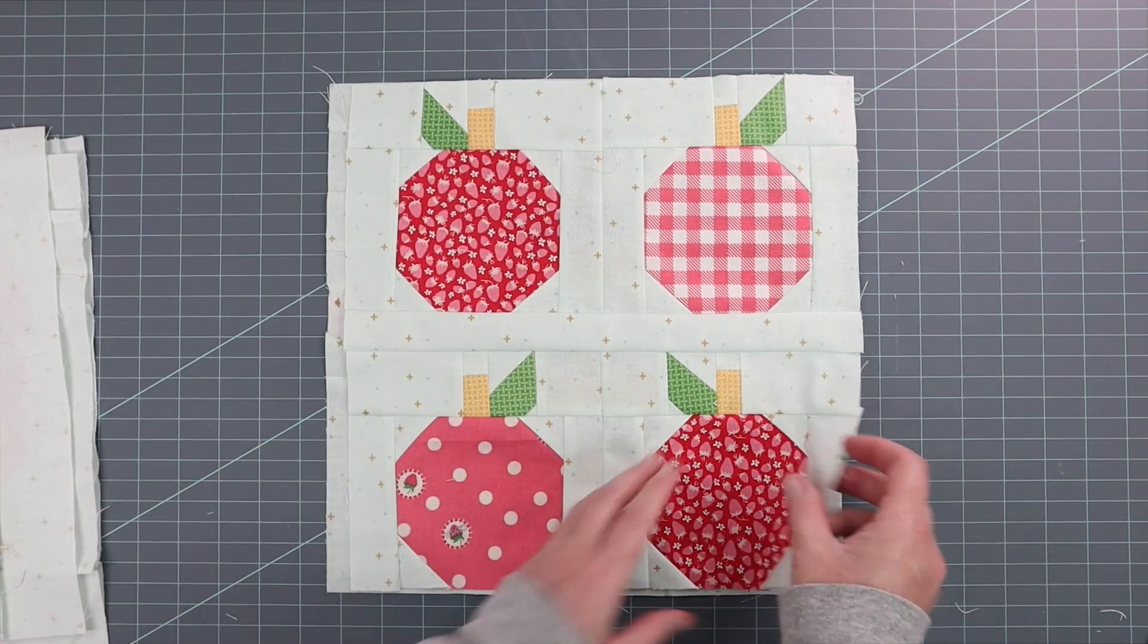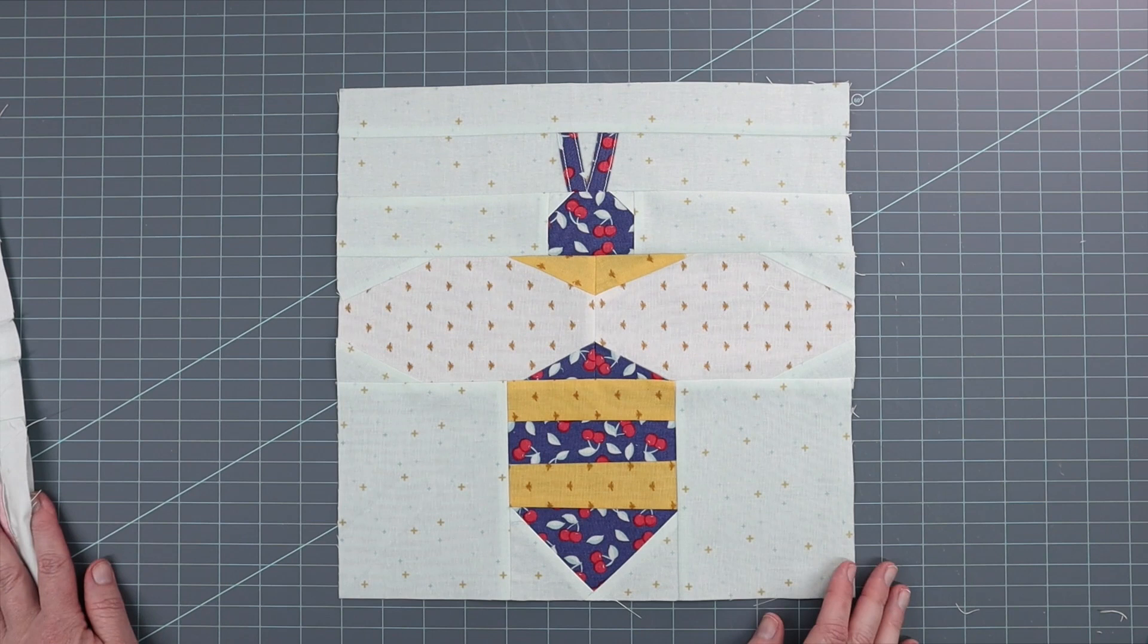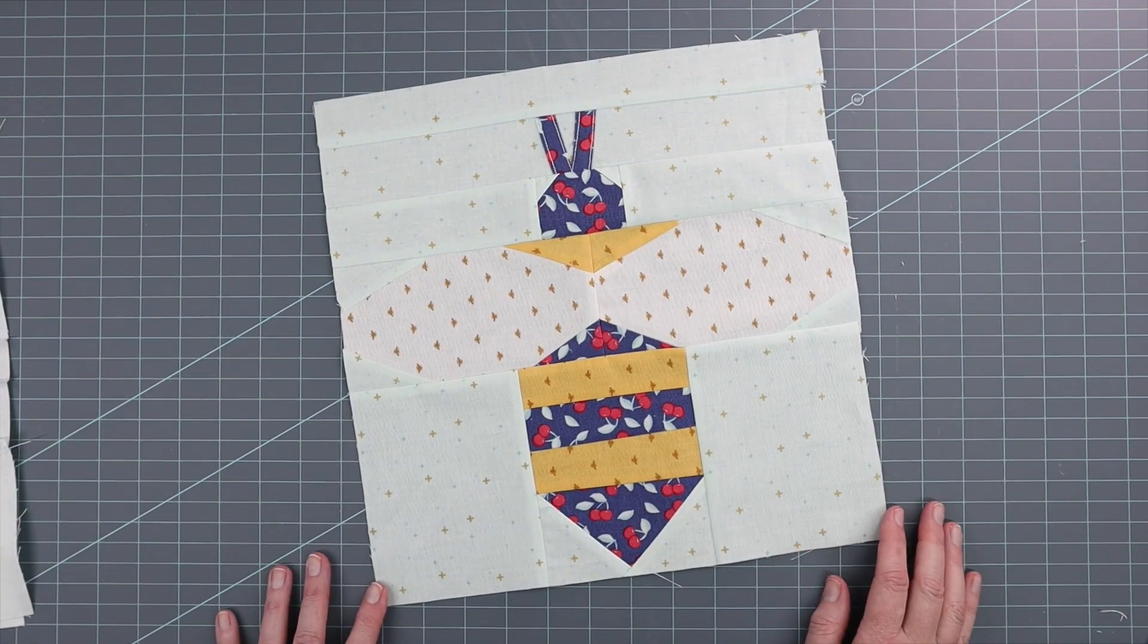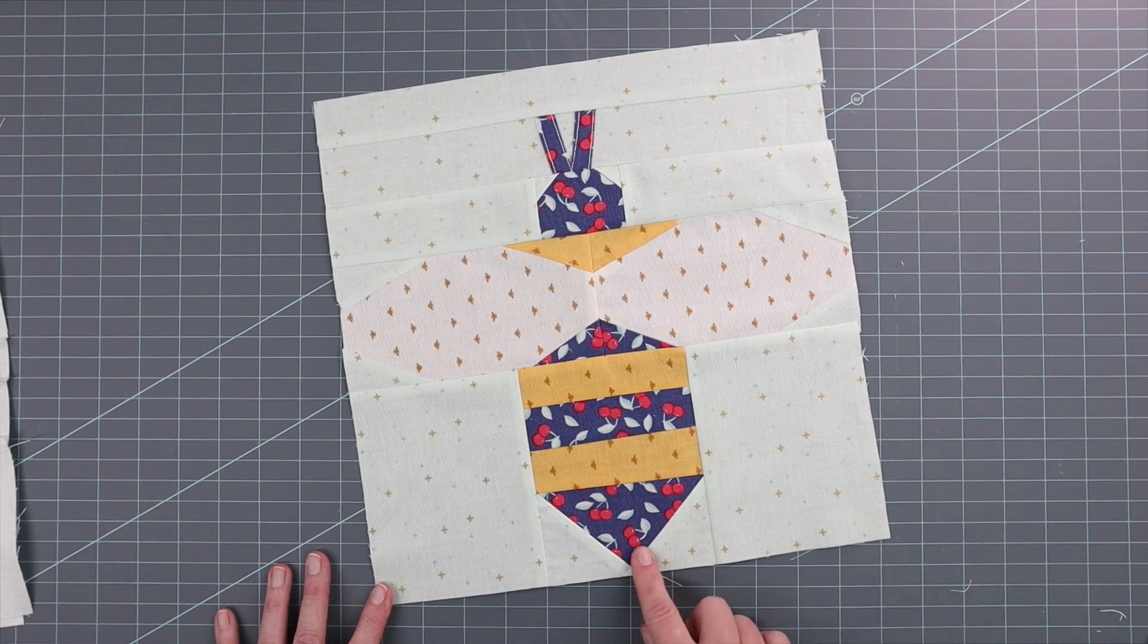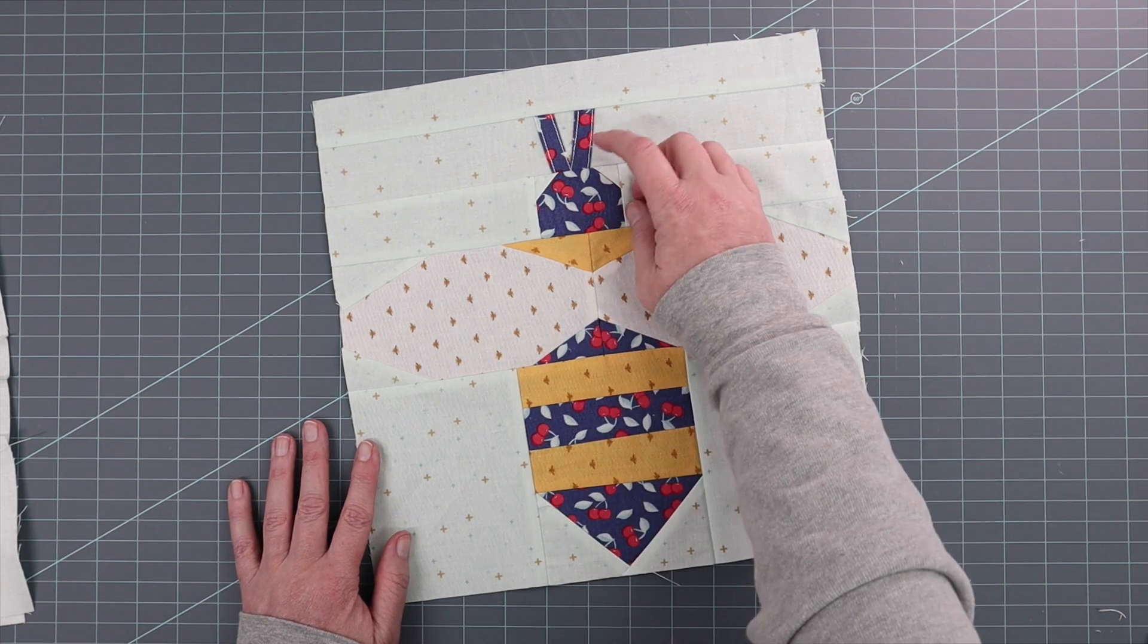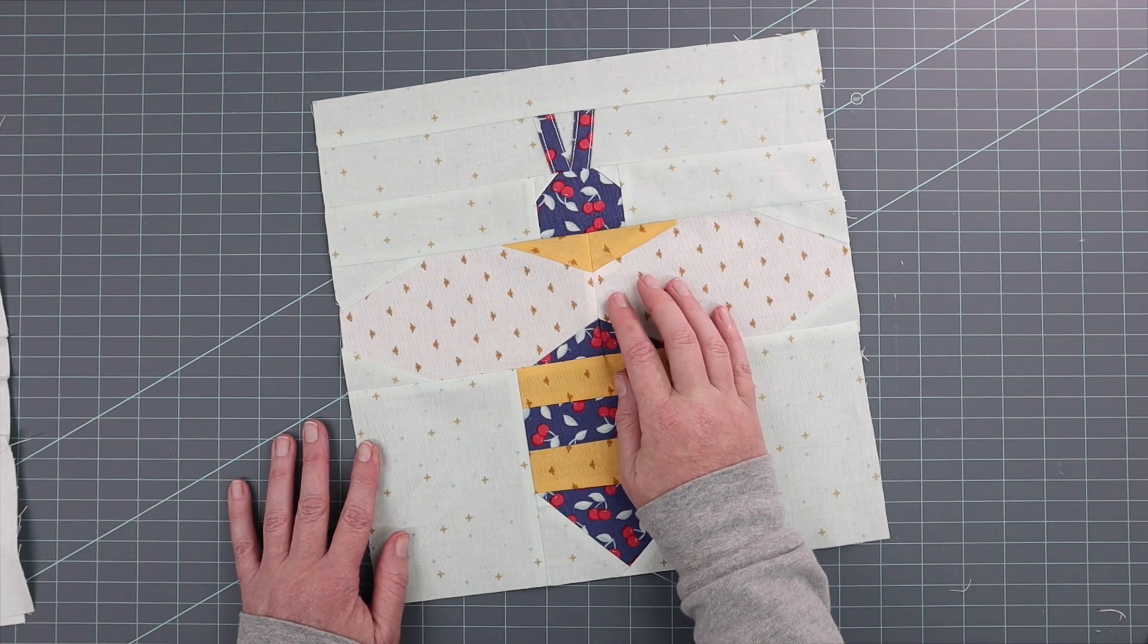This week we are covering the bee blocks. This block features a lot of techniques that we used in previous quilt videos, so I will reference those but I won't repeat the techniques. There is a flying geese block, then snowballed corners, and bias strips machine appliqued to create the antenna.